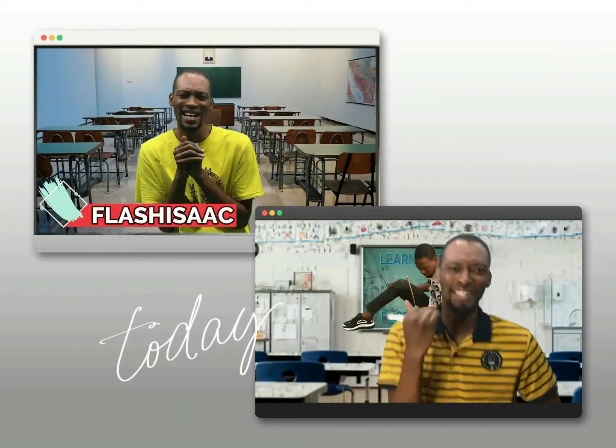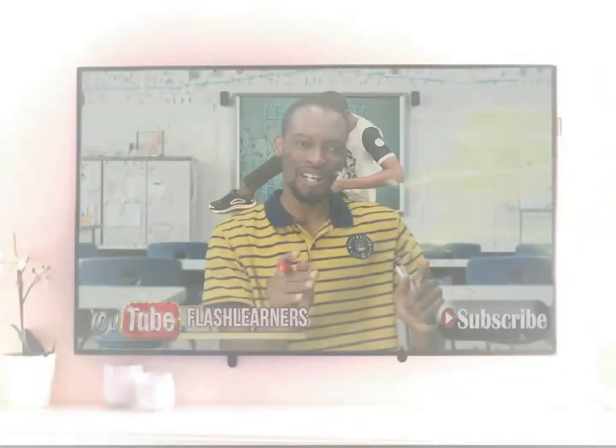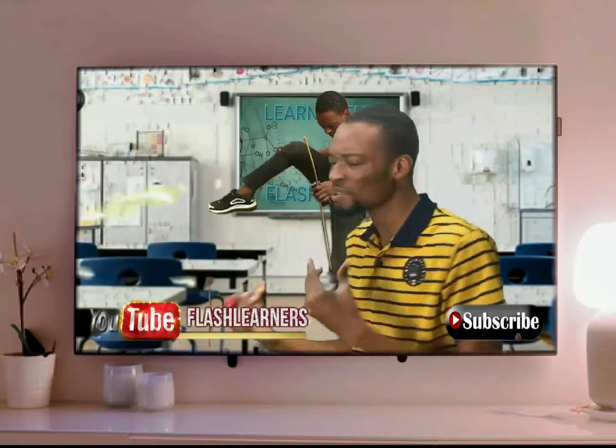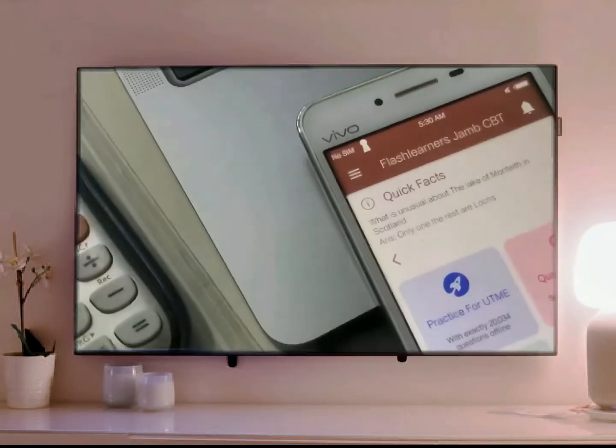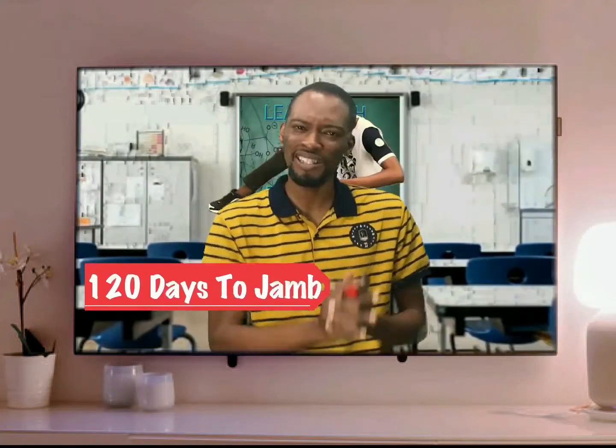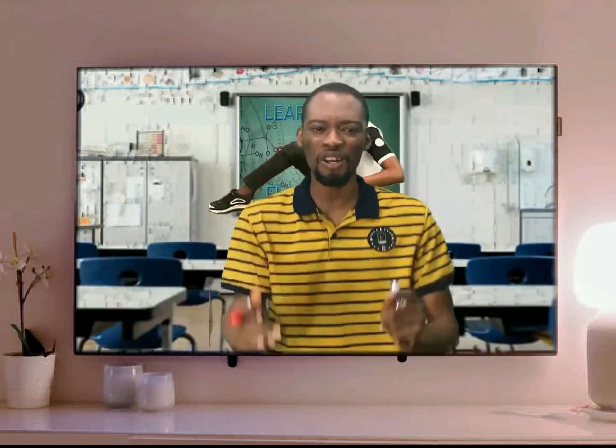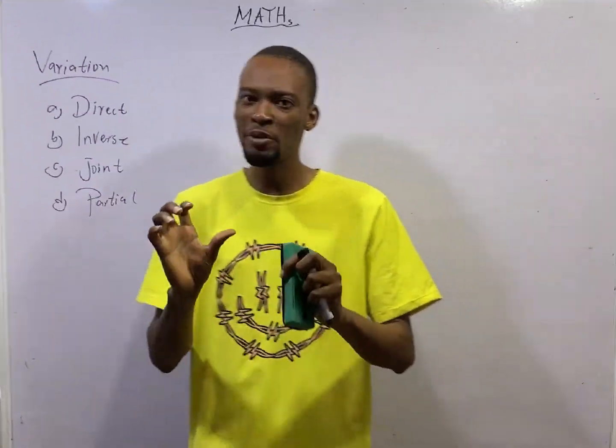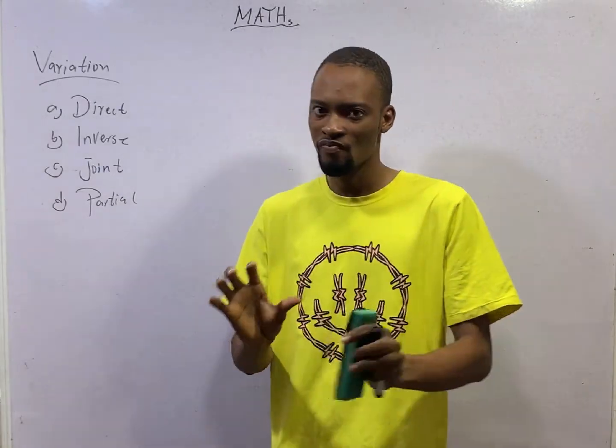My name is Flash Isaac and I am a teacher from the future. When I was much younger, I saw thousands of people fail jamb and unable to gain admission. This made me travel in time. Now I am back with the Flash Learners Jamb app and the series on YouTube tagged 120 days jamb. My mission is to help you blast jamb and get justice for everyone who jammed at 7 breakfast. This is episode number 36 of the 120 days to jamb Mathematics with Flash Isaac.